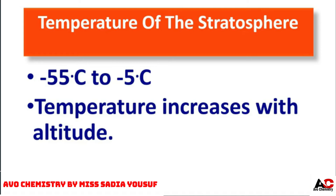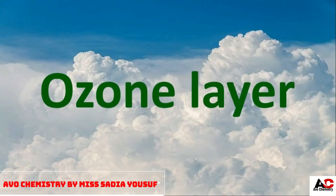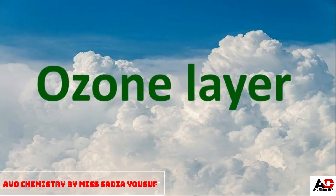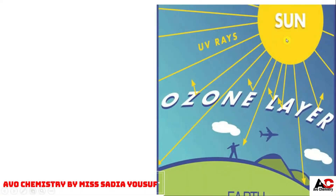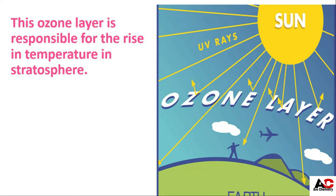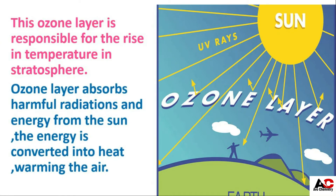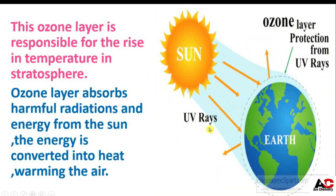Why does temperature increase as altitude increases? The reason is the presence of the ozone layer. The ozone layer absorbs UV radiations coming from the sun, due to which temperature increases. The ozone layer sits between the sun and Earth, absorbing harmful radiations and energy. This energy is converted into heat, warming the air. These UV radiations cannot reach the ground due to this ozone layer.